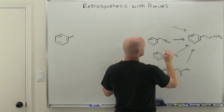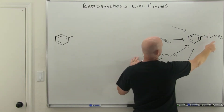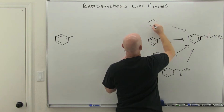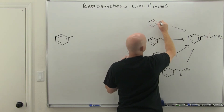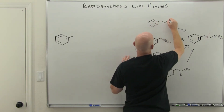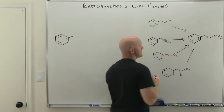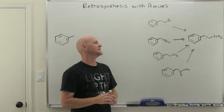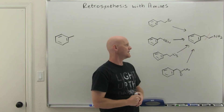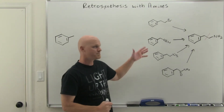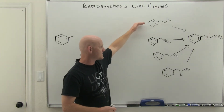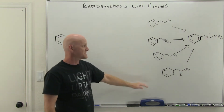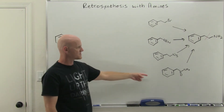We could also try the Gabriel synthesis, since it's a primary amine. For the Gabriel synthesis you'd start with the corresponding alkyl halide — in this case two carbons and a halogen — before adding phthalimide and related reagents. So those are some of our options; now we have to ask which is probably the easiest to make.